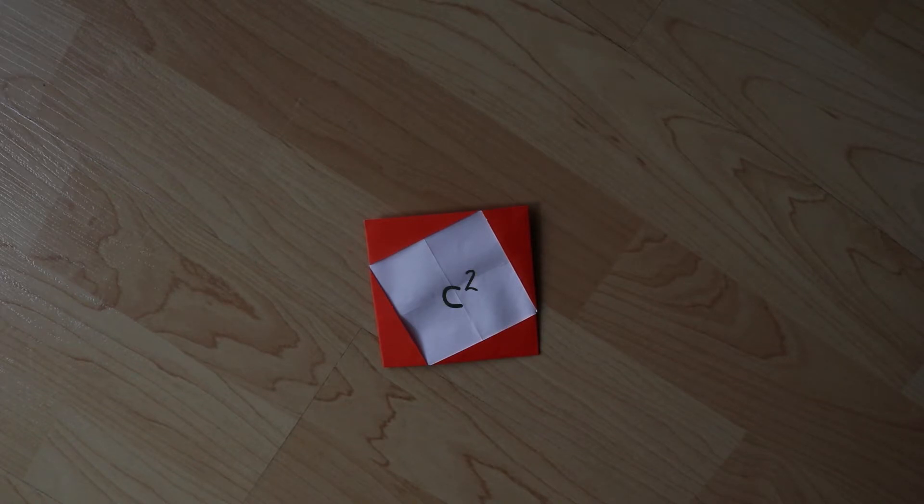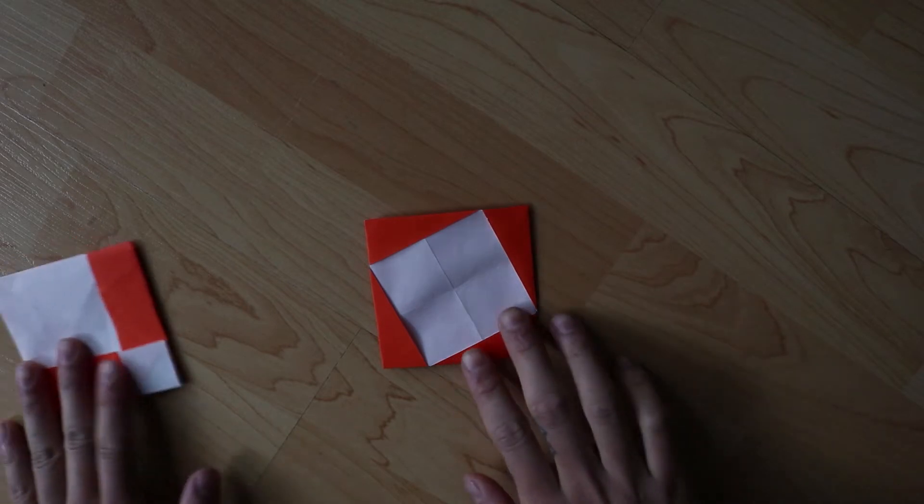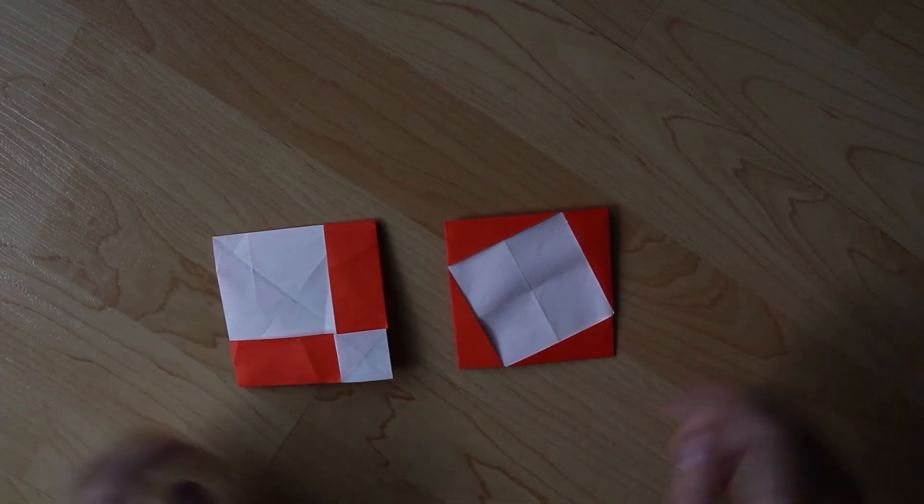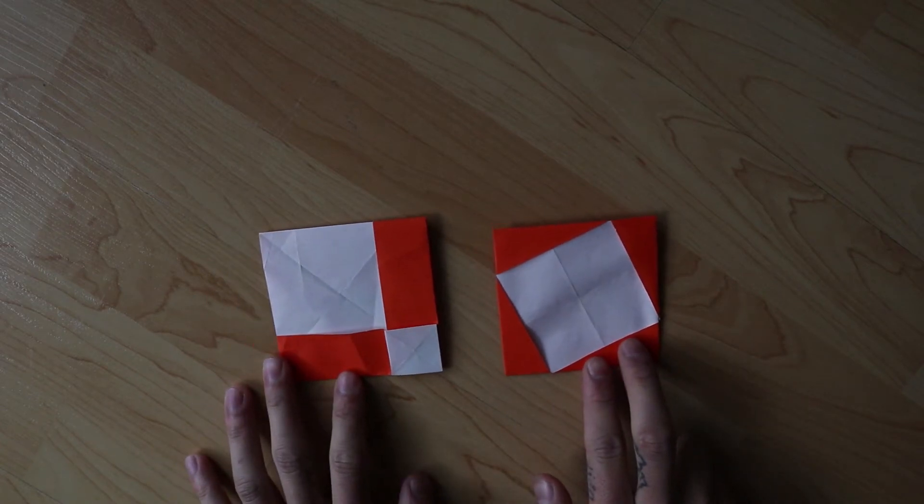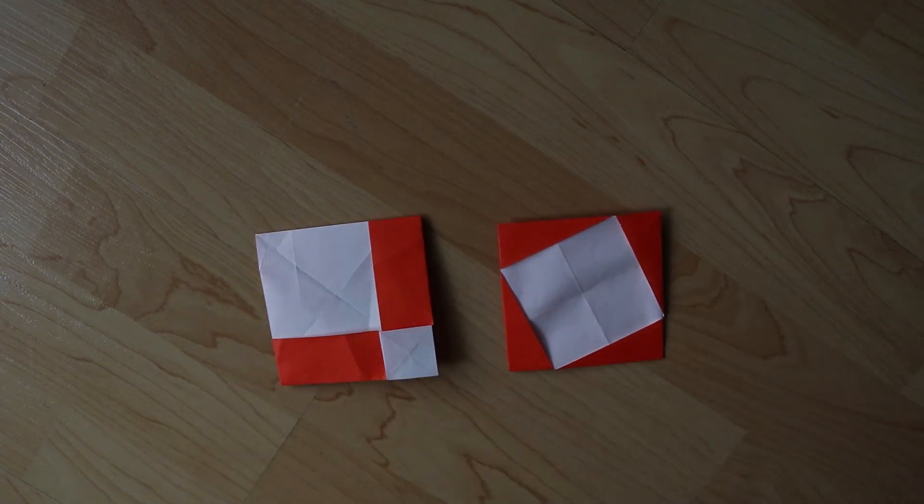But remember, all we did was rearrange the parts. It must have been the same area as these two squares from before. c squared is equal to the sum of a squared and b squared.